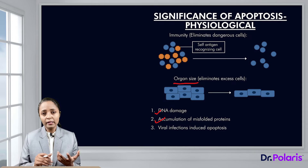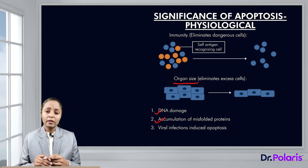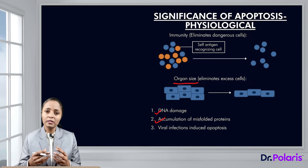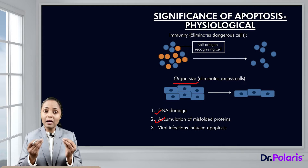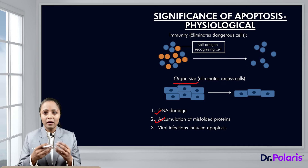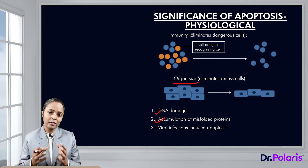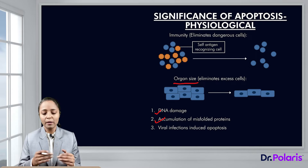There are also viral infection-induced apoptosis cases. When a cell becomes virally infected, the virus is inside the cell using its machinery to replicate. So the cell signals to immune cells that they can come and kill it. This informing of immune cells to cause the killing of the infected cell also occurs by apoptosis.